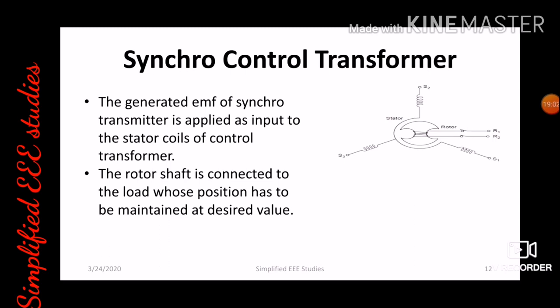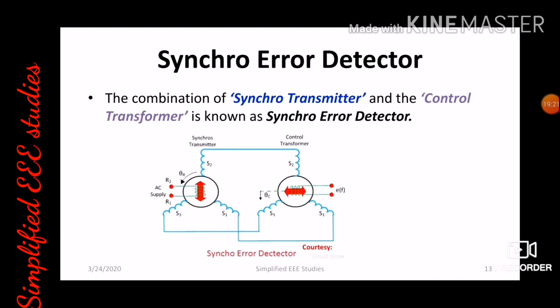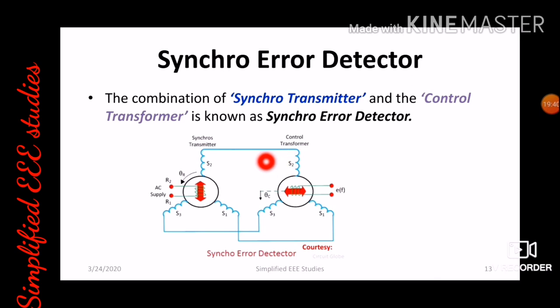In the case of the synchro transmitter, rotor acts as primary and stator acts as secondary. But in the synchro control transformer, the rotor acts as secondary and the stator acts as primary — that is the only difference. The combination of synchro transmitter and the control transformer is basically called a synchro pair or error detector.